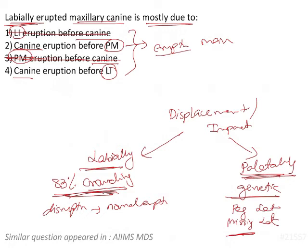Canine eruption before the lateral incisor might lead to transposition of the tooth. This may occur because either the lateral incisor is missing, or the canine has erupted before the lateral incisor. In that case, the lateral incisor may erupt in the place of the canine or become impacted, resulting in transposition or impaction of the lateral incisor.